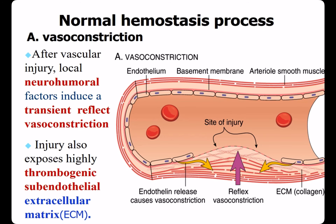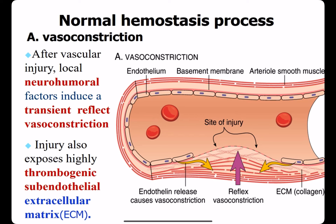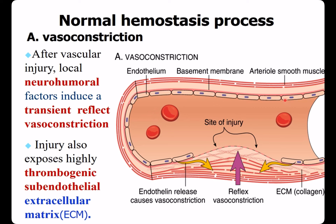Now let's review the hemostasis process. This is an arteriole. It is endothelium. It is smooth muscle. Extracellular matrix, that is ECM, is under endothelium. Its main component is collagen fiber.